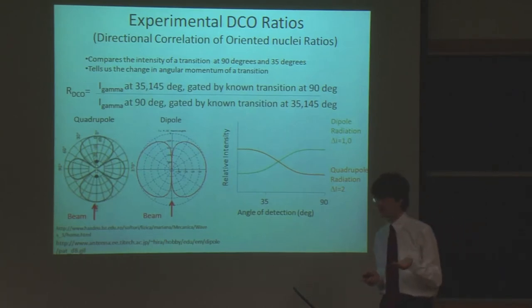Using something called DCO ratios. DCO ratios depend on the fact that gamma rays can be emitted in two different ways: quadrupole radiation, which has a change in angular momentum of delta I of 2, and dipole radiation, which has a change in angular momentum of 1 or 0. If it's quadrupole, it will emit the gamma rays more intensely at 0 degrees than at 90 degrees. And if it's dipole, it's the opposite. So because we have detectors at different angles, we can measure the different intensities at different angles for a specific decay. And then we can determine the change in angular momentum of a transition.